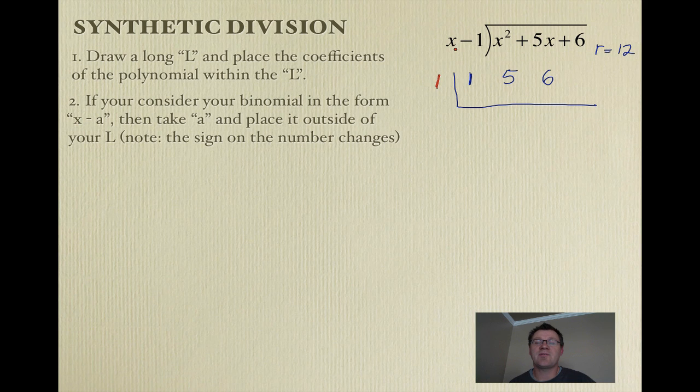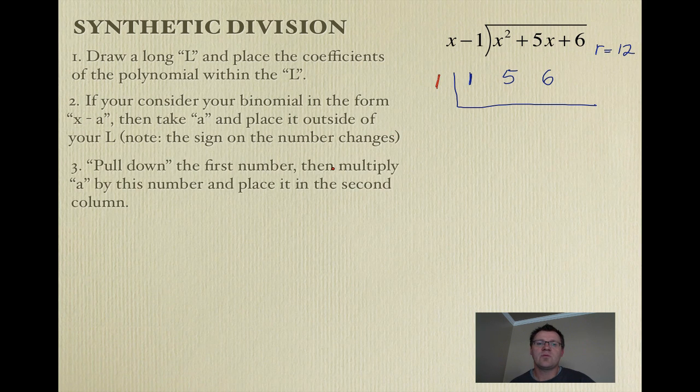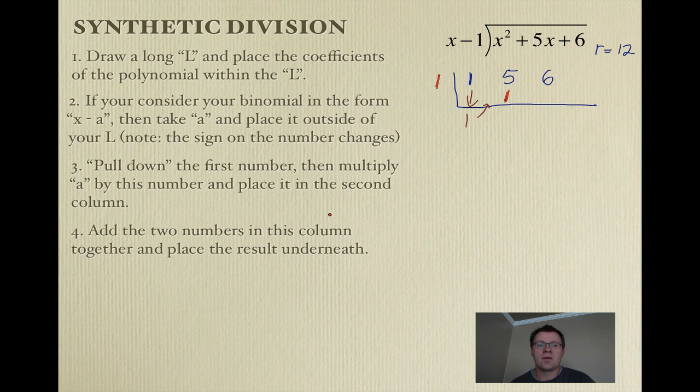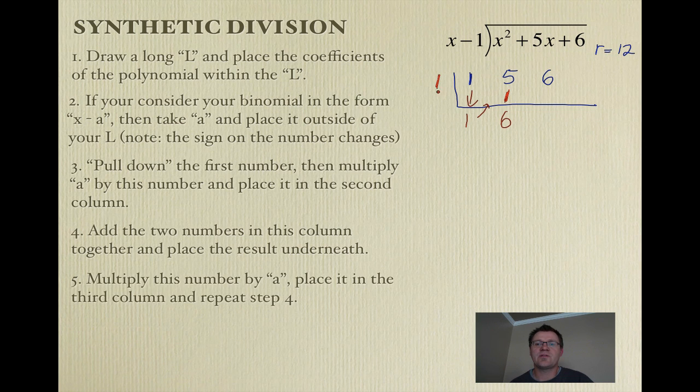And I do this so we don't actually have to subtract. What we're going to do is add. Our third step, we're going to pull down the first number. So, that's the 1. We're going to pull it down. And we're going to multiply this number by A. So, 1 times 1. And we're going to put the result in the second column, right here. We're going to add the two numbers together in this column. And that gives us a 6. And place the result underneath. And we're going to repeat our steps. We're going to multiply this number 6 by 1. So, 1 times 6. And we're going to move it up over here. So, that becomes a 6. And then we repeat the adding step. So, we get 12. And we would continue this process until we run out of columns.